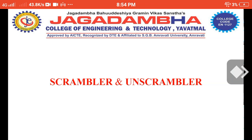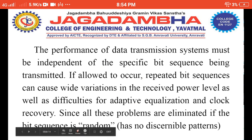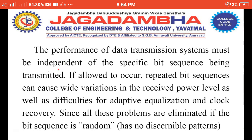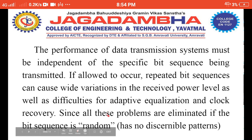Welcome. In this video we will see the scrambling and unscrambling used in a data transmission system. We know that in a data transmission system the performance must be independent of the specific bit sequence being transmitted. If we allow repeated bit sequences to occur, this can cause a wide variation in received power level, difficulty for adaptive equalization and clock recovery. Since all these problems are eliminated if the bit sequence is random.